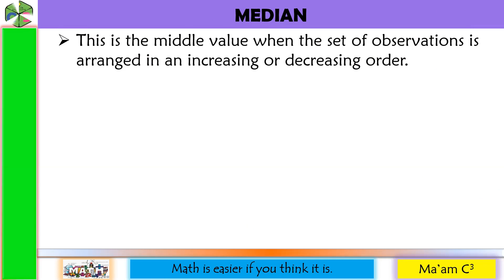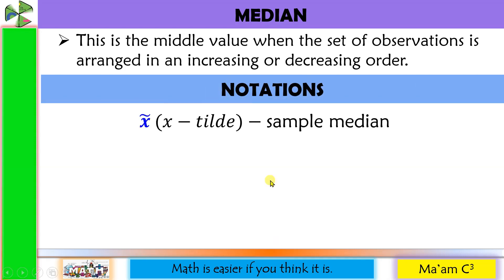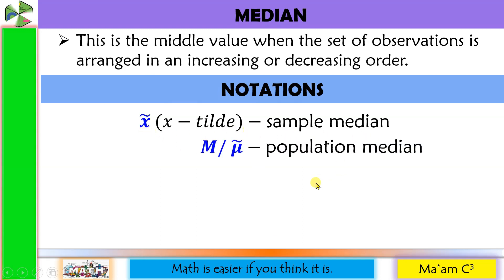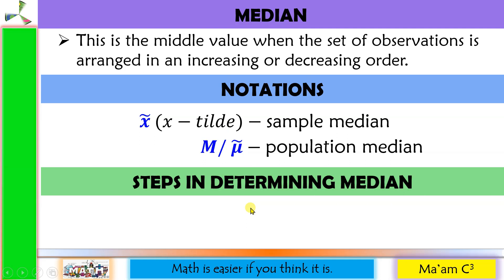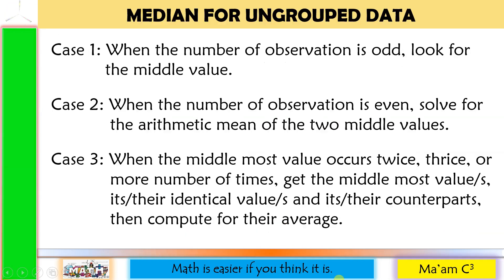The next measure of central tendency is the median. This is the middle value when the set of observations is arranged in an increasing or decreasing order. The notation x-tilde is used for sample median, and capital M or the mu-tilde symbol for population median. There are two steps: first, arrange the data in ascending or descending order; second, find the middle number. We have different cases of median for ungrouped data.